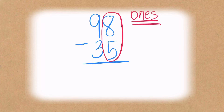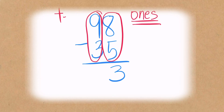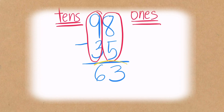The answer is three. Now let's go to the tens place. In the tens place we have the digits nine and three — so what is nine minus three? It gives you six. So the final answer is 63.